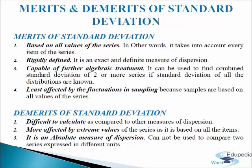Now we come to merits and demerits of standard deviation. First, merits: standard deviation is based on all values of the series — it takes into account every item. Second, it is rigidly defined; it is an exact and definite measure of dispersion and is widely used because of this feature. Third, it is capable of further algebraic treatment — it can be used to find combined standard deviation of two or more series if the standard deviations of all distributions are known. Fourth, it is least affected by fluctuations in sampling, because calculations are based on all values of the series.